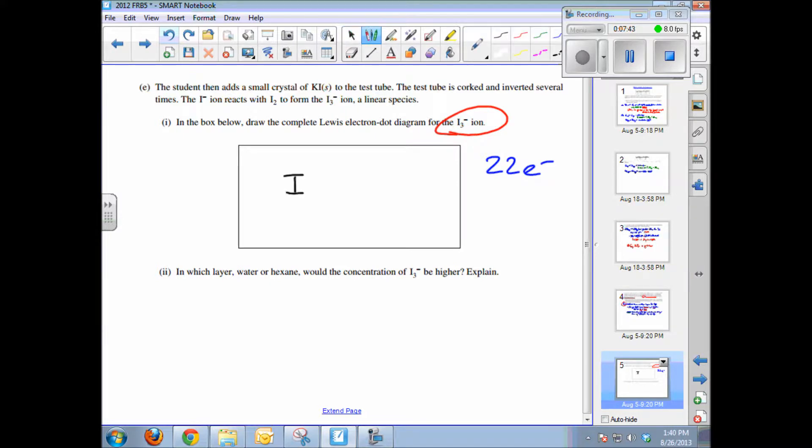So we have 3 iodines and we're going to form a covalent bond between each iodine. So that's 2, 4 out of the 22 electrons that have been used up. So we've used 4, 6, 8, 10, 12.